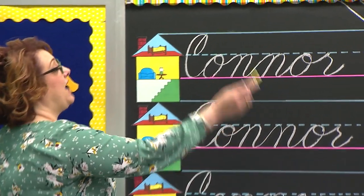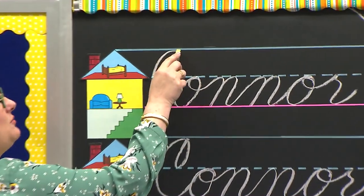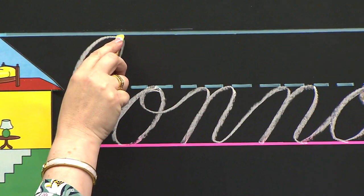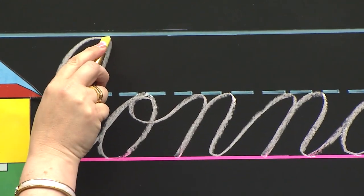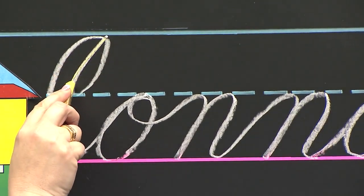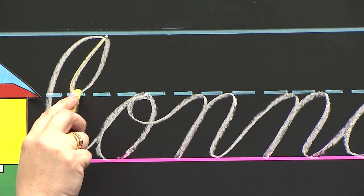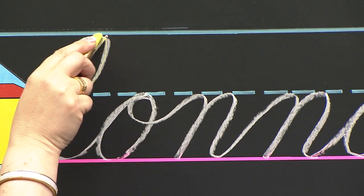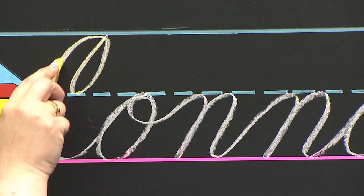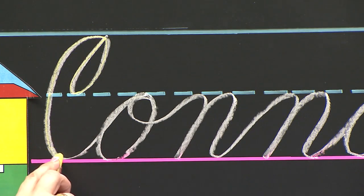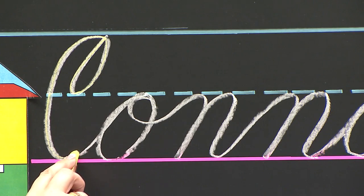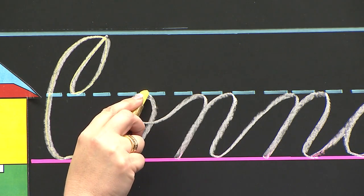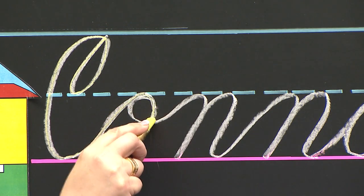We're going to start with our capital letter — that's how we always start. And on this boy's capital letter C, I'm going to go down, curve at the dotted line, and go right back up to the ceiling. Then I curve toward the houses, down to the pink carpet. And as I end in my smile, I'm going to go up and curve around and stop.